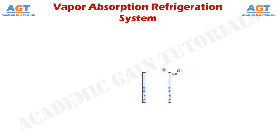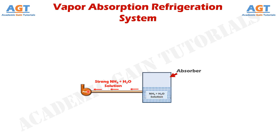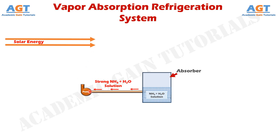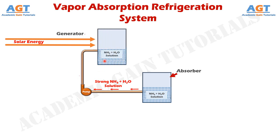First of all, here we have an absorber. Inside this absorber, we have a solution of ammonia and water. And beside this absorber, there is a pump. Now, when solar energy is supplied to the system and the generator, then this pump starts working. Using this pump, we will pump this solution of ammonia and water from the absorber to the generator. So, the function of this pump is to transfer the solution from the absorber to the generator, which is running on solar power.